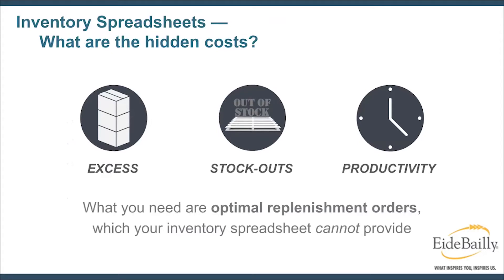What are the hidden costs of not using a best practices approach? There are really three key things: excess inventory, stocking out of inventory, and the productivity of buyers and planners. The biggest challenge is a stockout — that's the worst thing that can happen, especially in this Amazon-driven world of expectations. If I run out of product, my customer is liable to go somewhere else to buy it because they're impatient. If they have a great experience at a competitor in that transaction, I stand to lose them altogether — gradually I've got customer retention challenges. The very worst thing is running out of stock and being unable to meet customer demands.